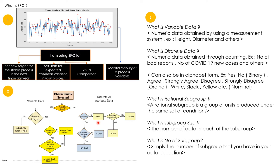If you are counting defects, this follows a Poisson distribution. For example, inspecting 200 orders a day and counting how many fields are incorrect or blank on a form — where every form has the same 20 fields — use the C chart. For the U chart, the difference is that each form has a different number of fields, meaning the sample size is not constant.